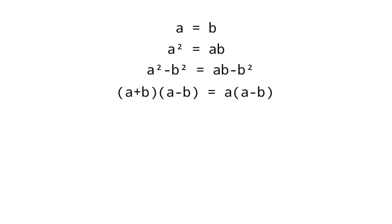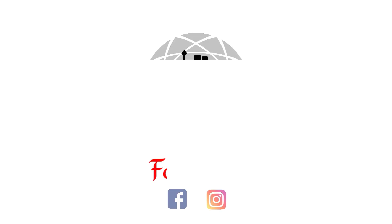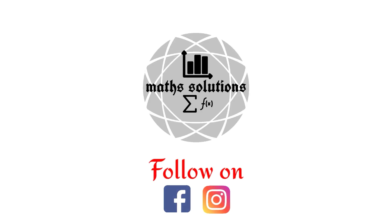Dividing both sides by (a minus b), we get a plus b equals b. Since a equals b, we substitute to get 2b equals b, that is 2 equals 1. So find where is the mistake — pause the video and try to solve this problem. I hope you found that step 5 is wrong.